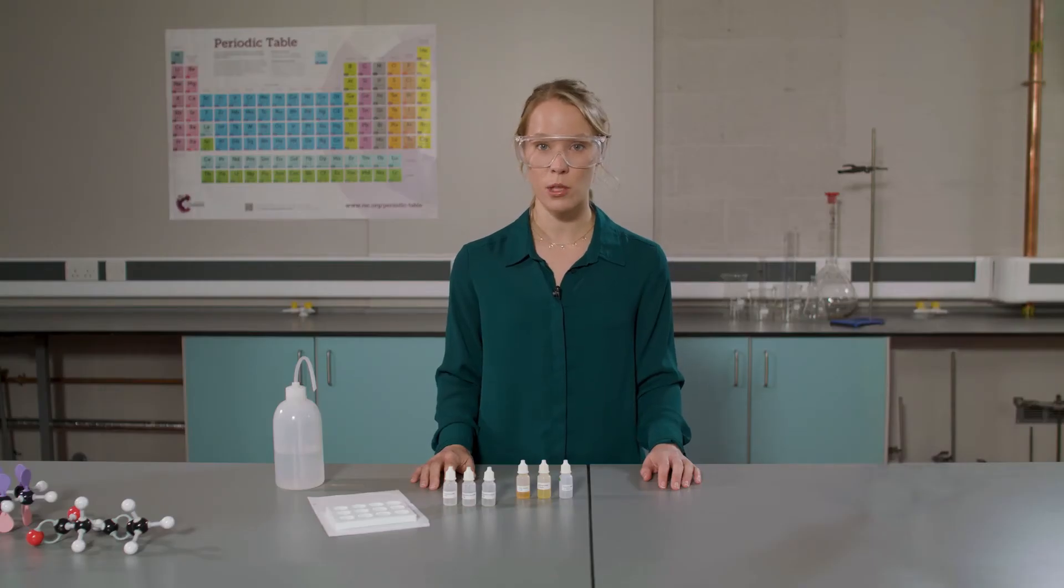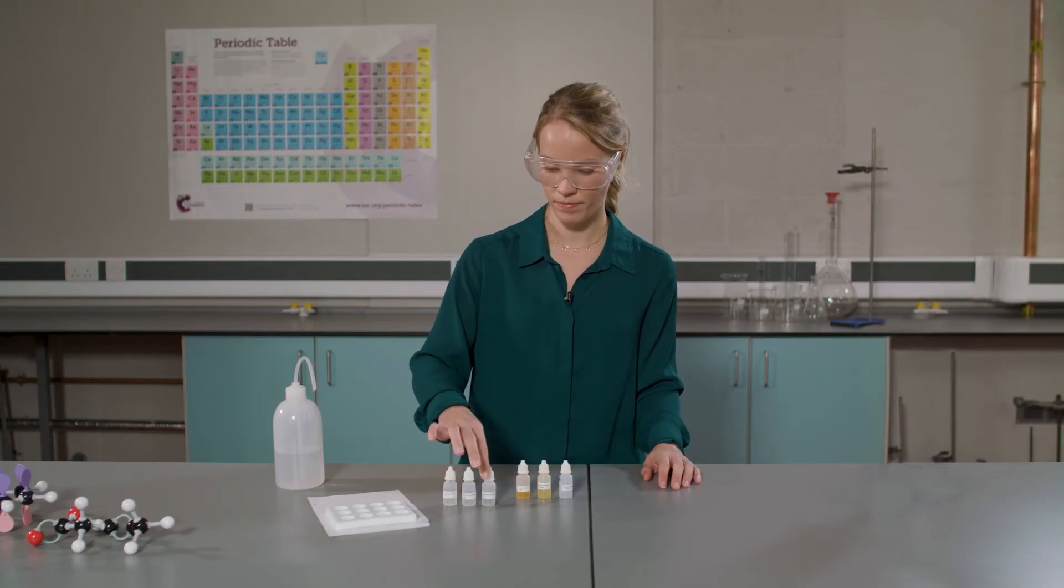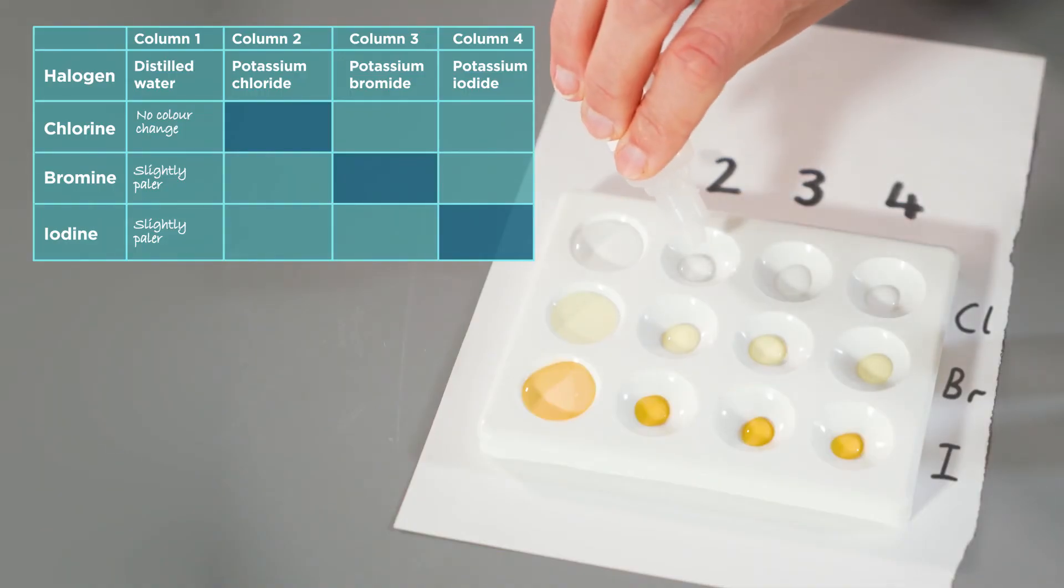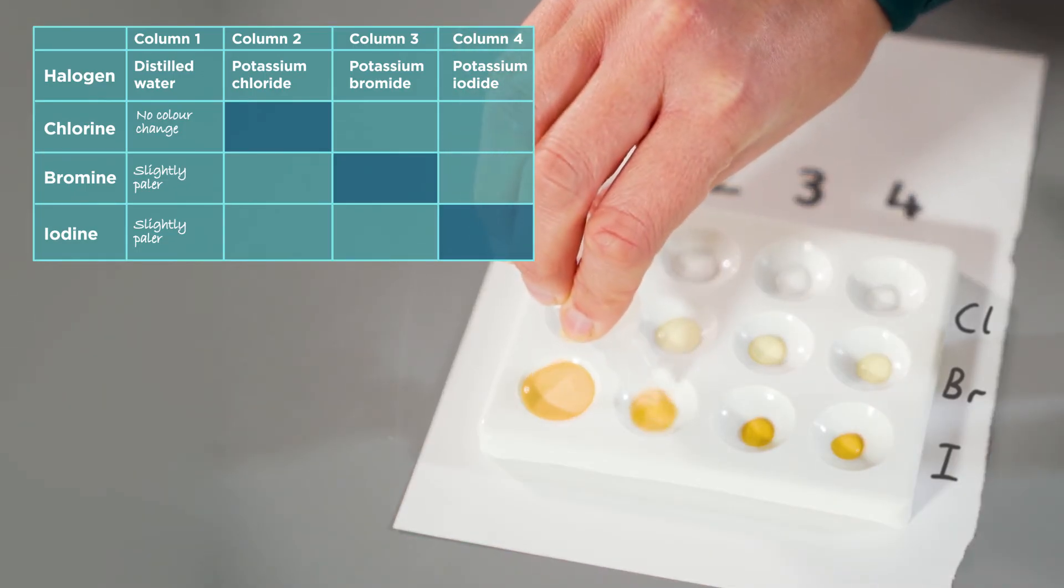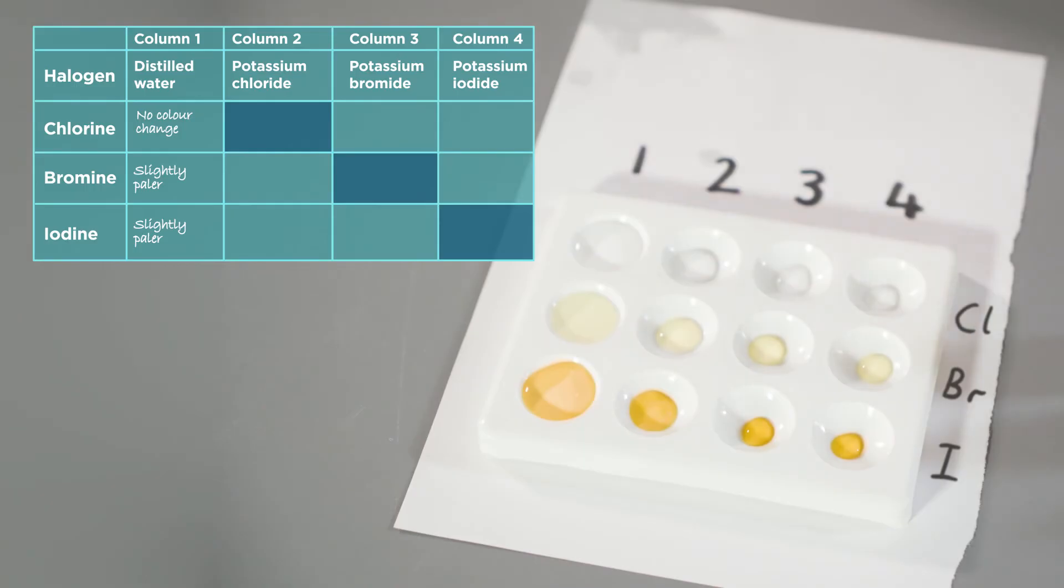Next, I'm going to add potassium chloride to the second column. Carefully observe and note down any changes. Here we can conclude that no displacement reactions have taken place when potassium chloride is added to chlorine, bromine and iodine water as the colours have not changed.